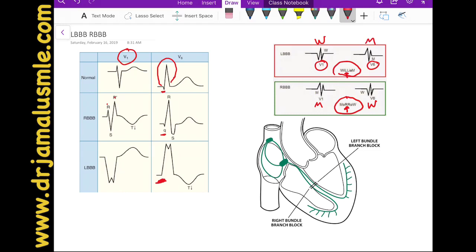And just to show you, for example, in this example, the left bundle, it looks like an M over here in V6, but it's not the same as the M they're showing you in the mnemonic. So just be aware of that.